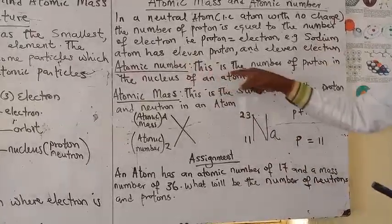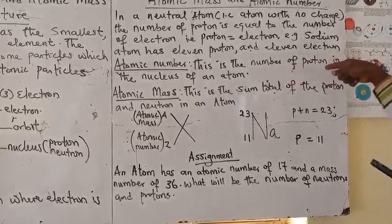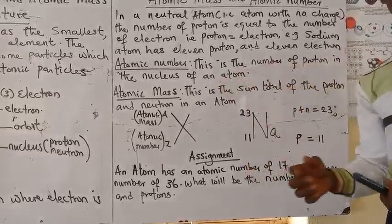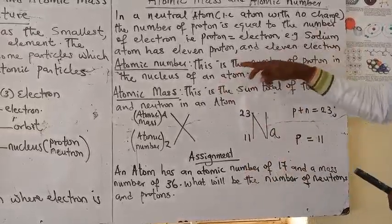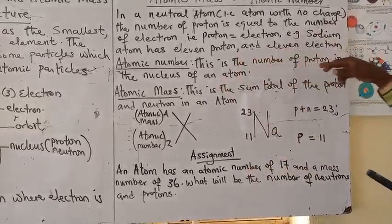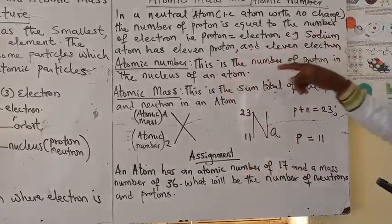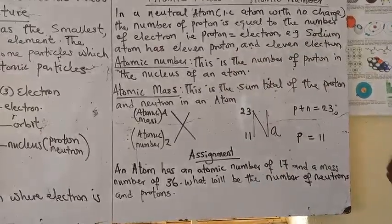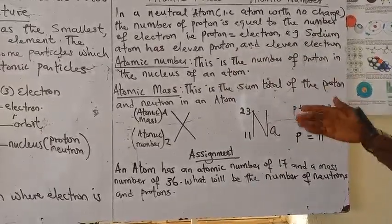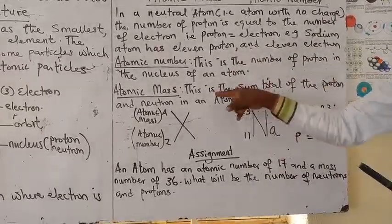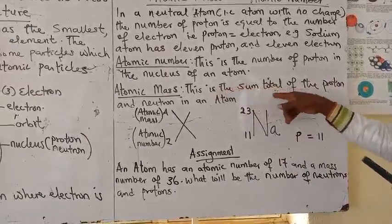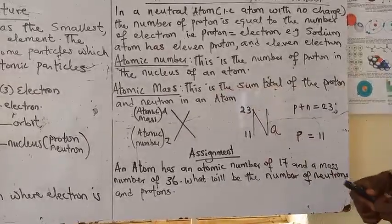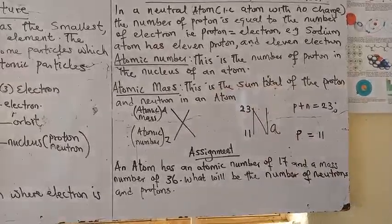The atomic number is the number of protons in the nucleus of an atom. And the atomic mass is the sum total of the protons and neutrons in an atom.